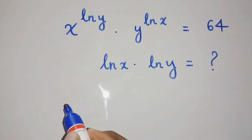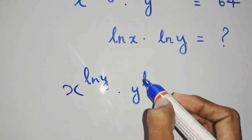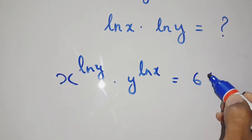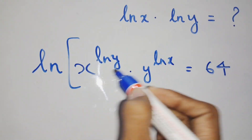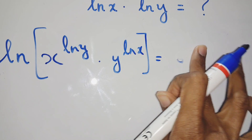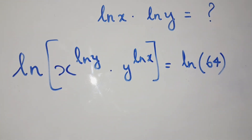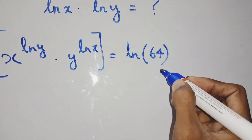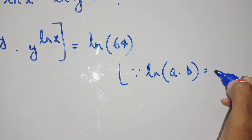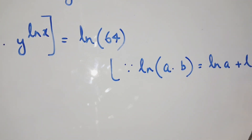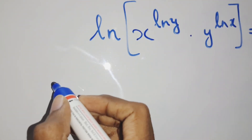We are given x to the power ln y, times y to the power ln x, equals 64. We can take ln of both sides. Now we have the formula: ln(a times b) equals ln a plus ln b. We will apply this here.